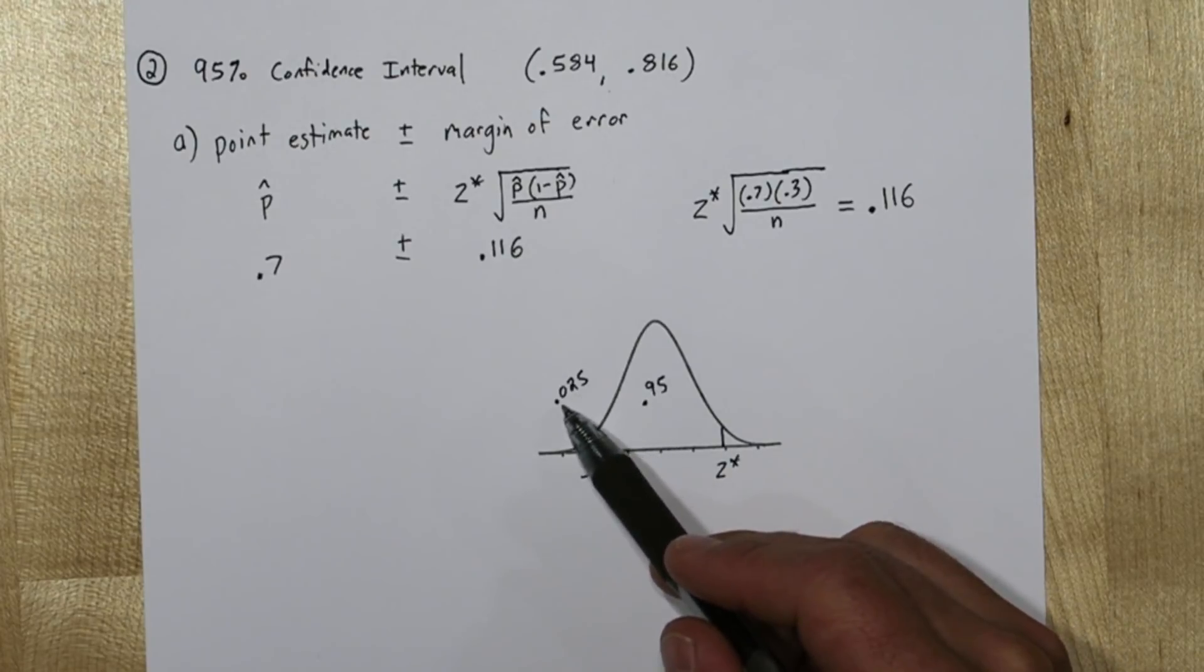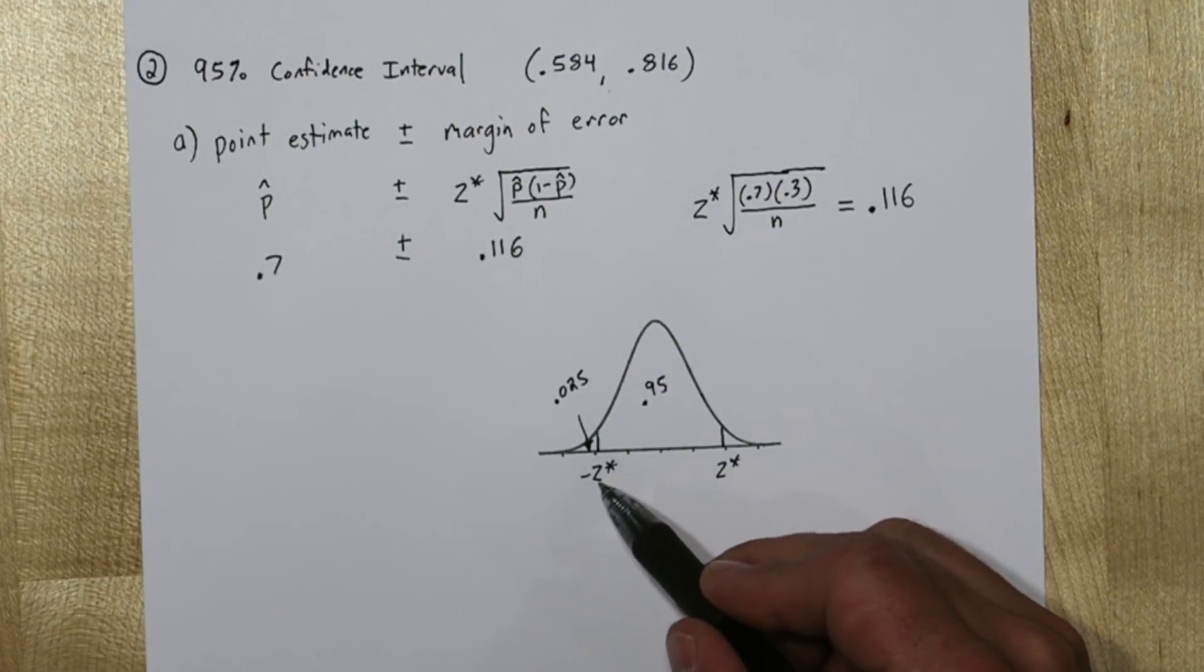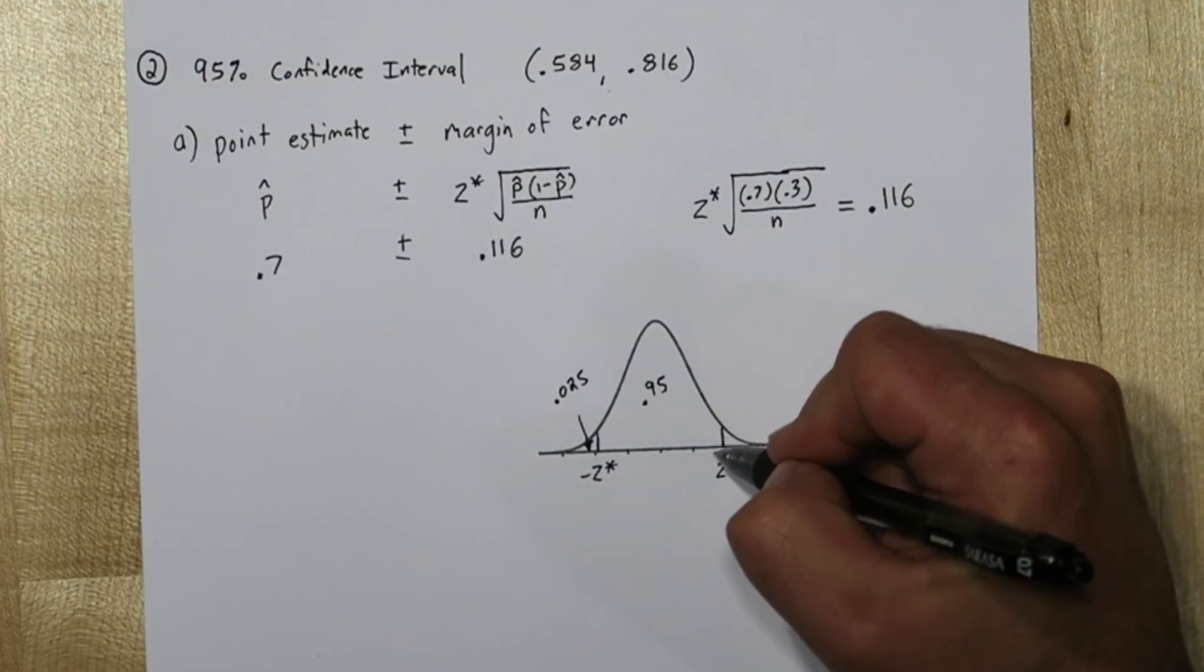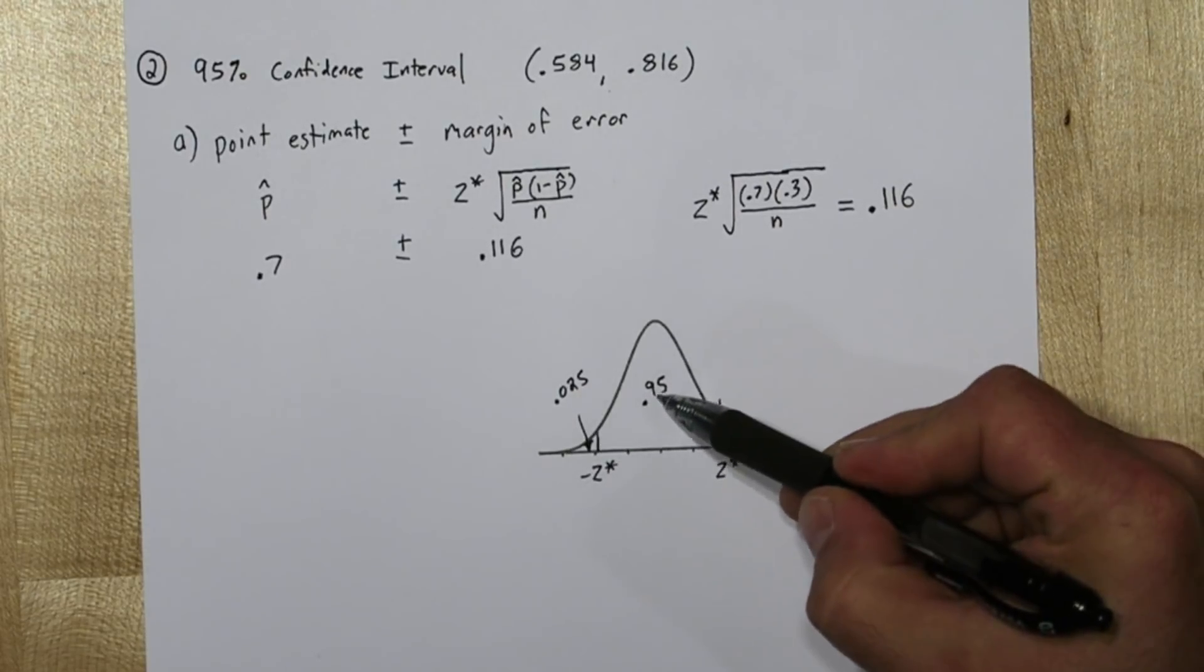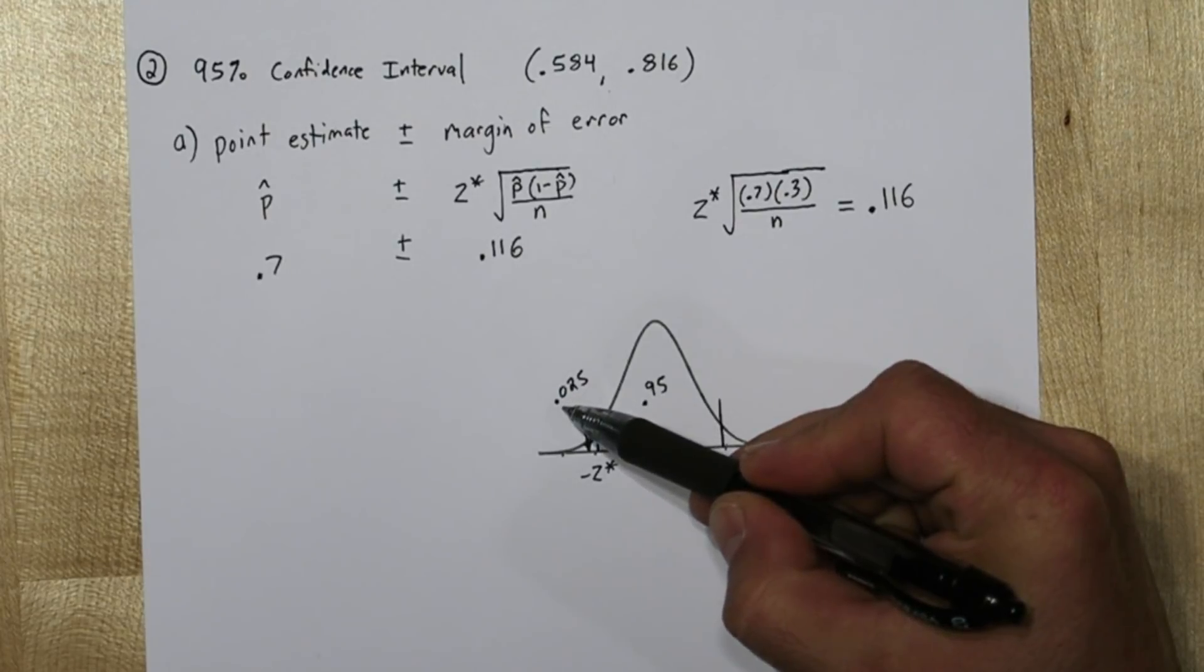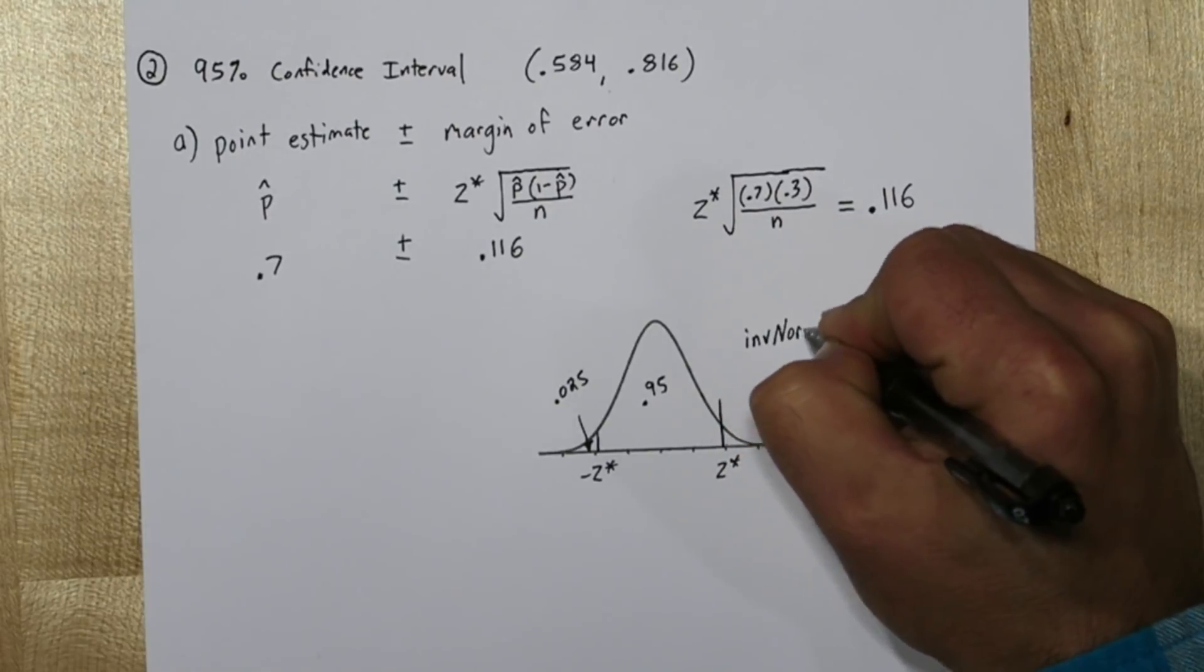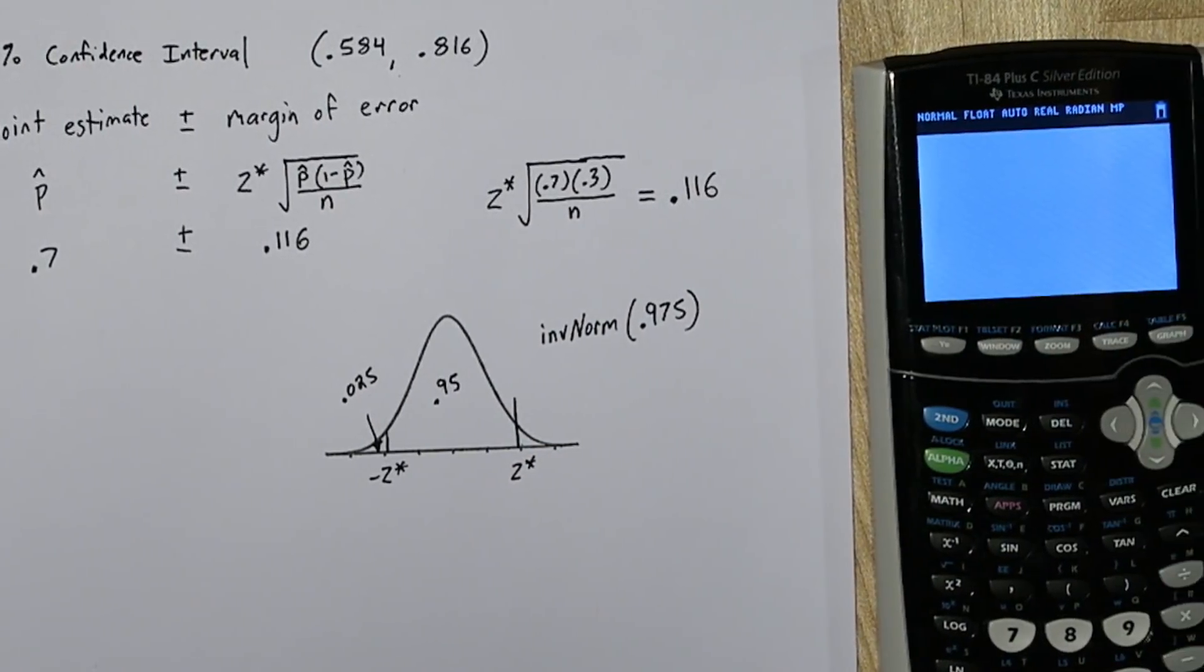Now we need this value because we can use inverse norm to find z-star. Let's actually find this upper z-star. The area to the left of z-star is 0.95 plus 0.025, in other words 0.975. So this is the value we're going to look up on the calculator.